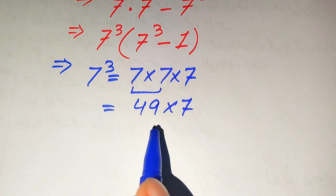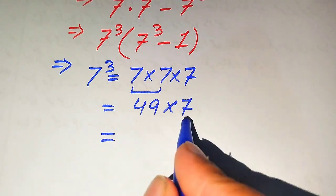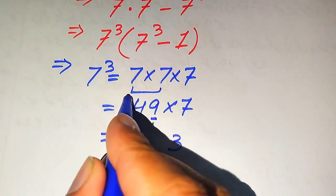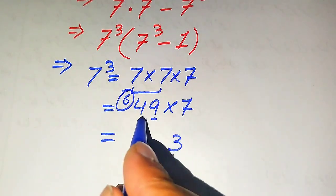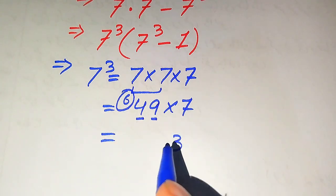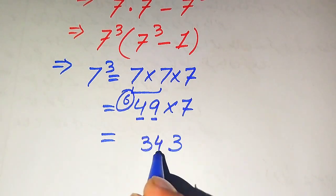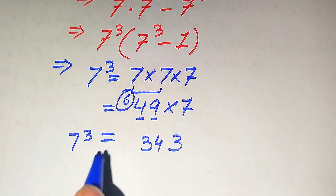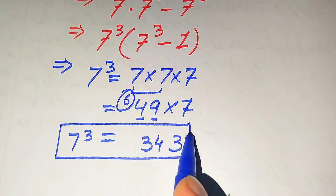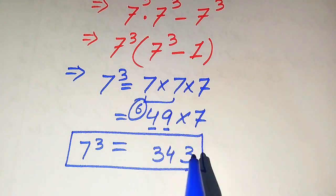We multiply 7 by 49. Starting: 7 nines are 63, write 3 and carry 6; 7 fours are 28, plus 6 becomes 34. So the value of 7 to the power of 3 equals 343.